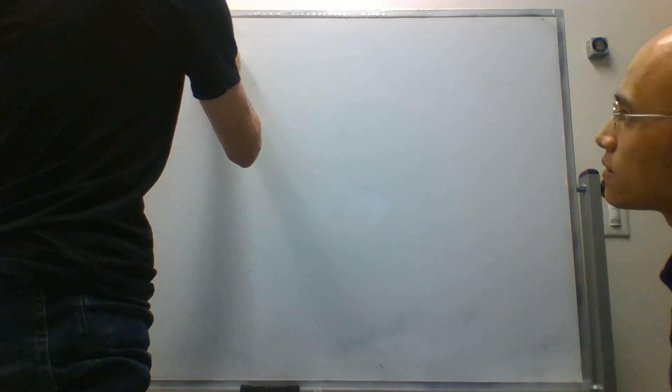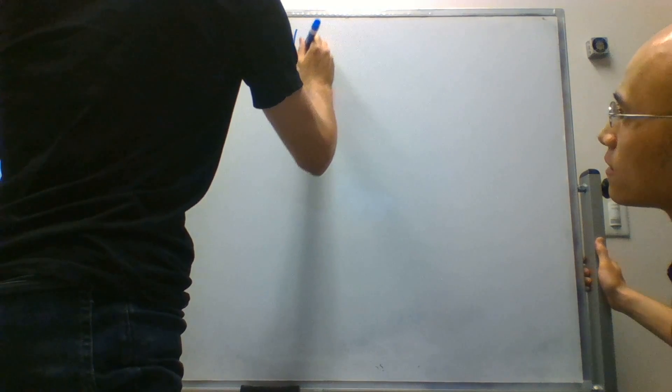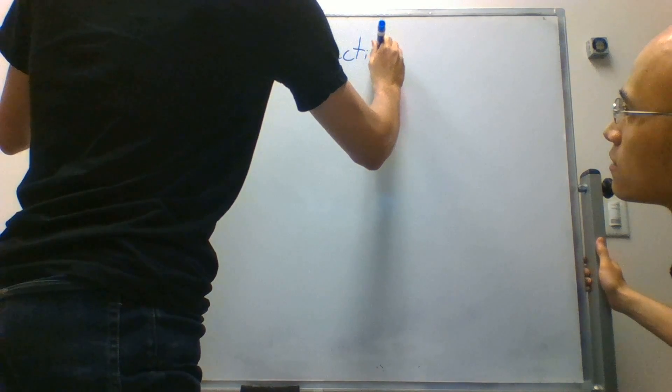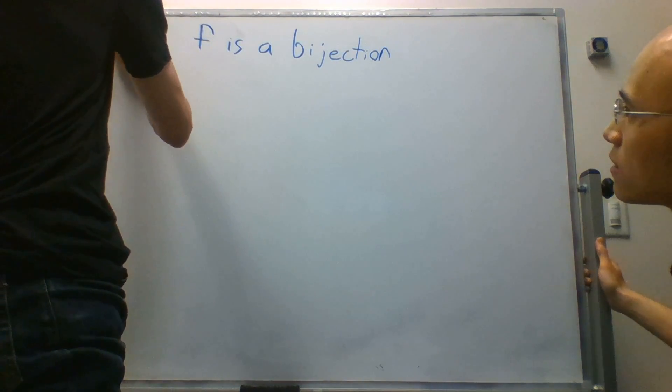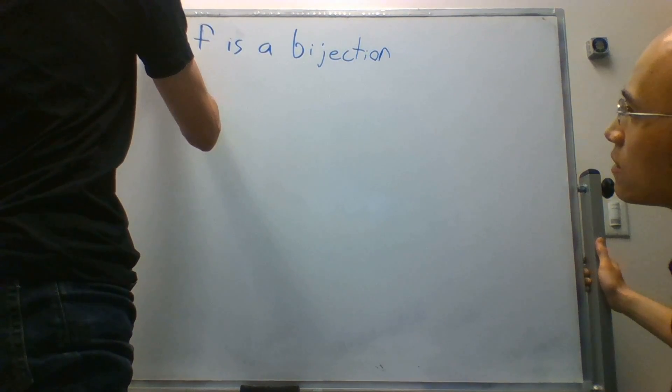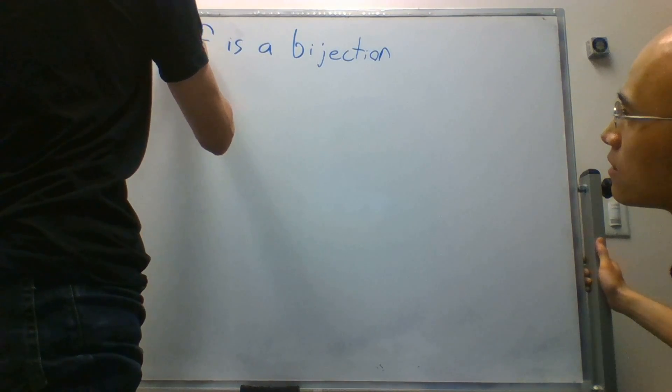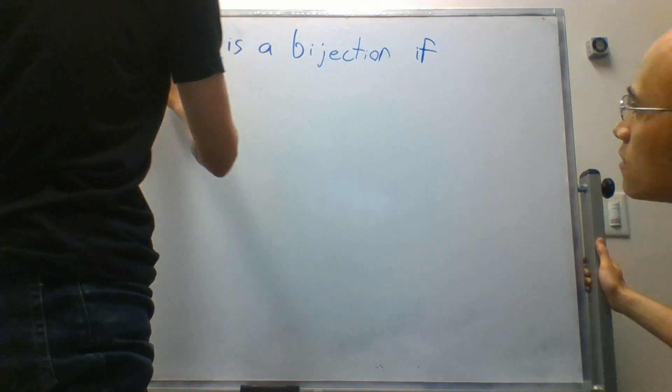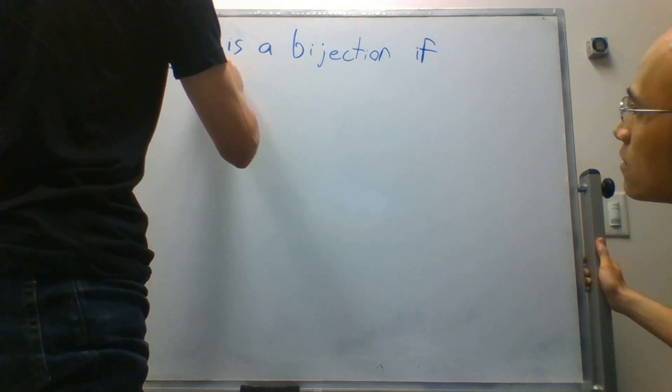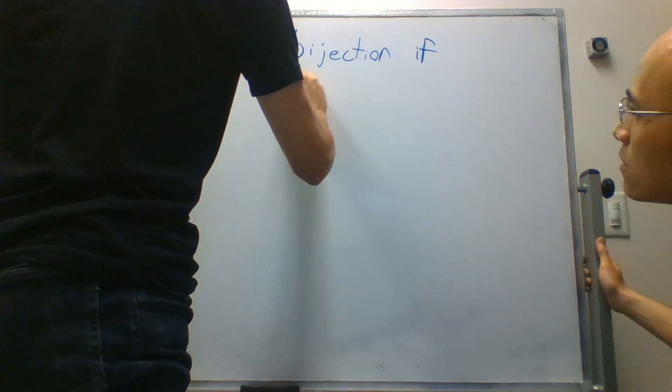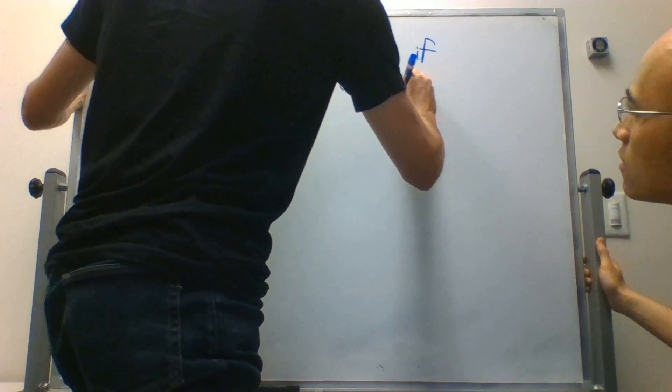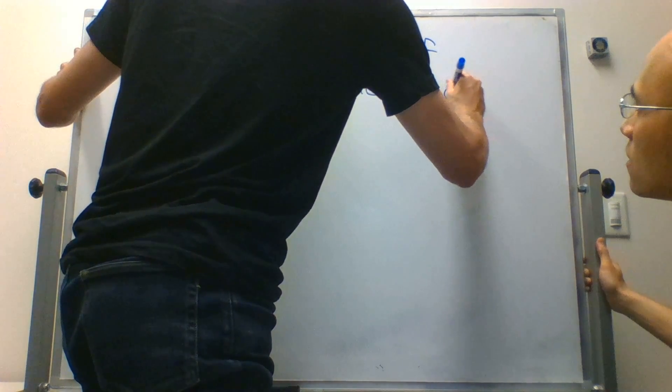Yes. So let's take, let's say, f is a bijection, and I'll maybe write a function just to make it super clear. A function f is a bijection if it is one-to-one and onto. Yes.